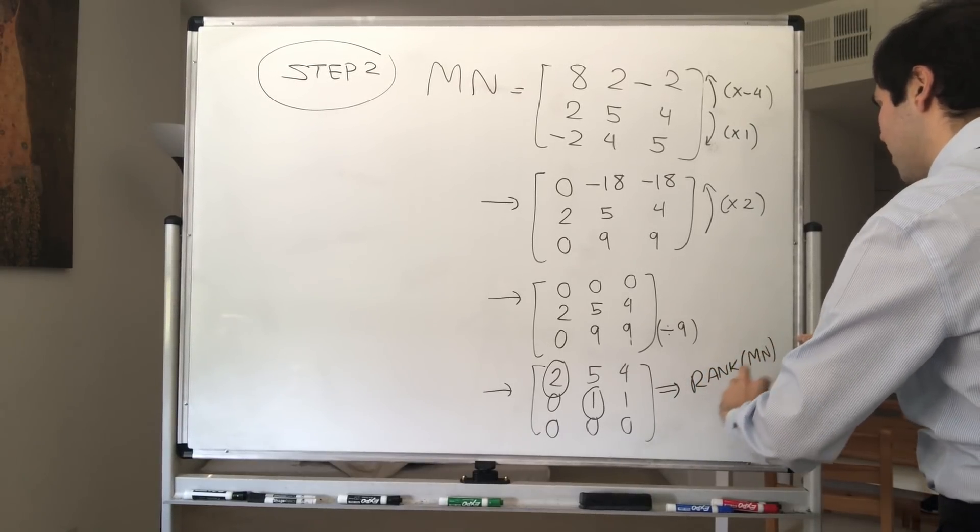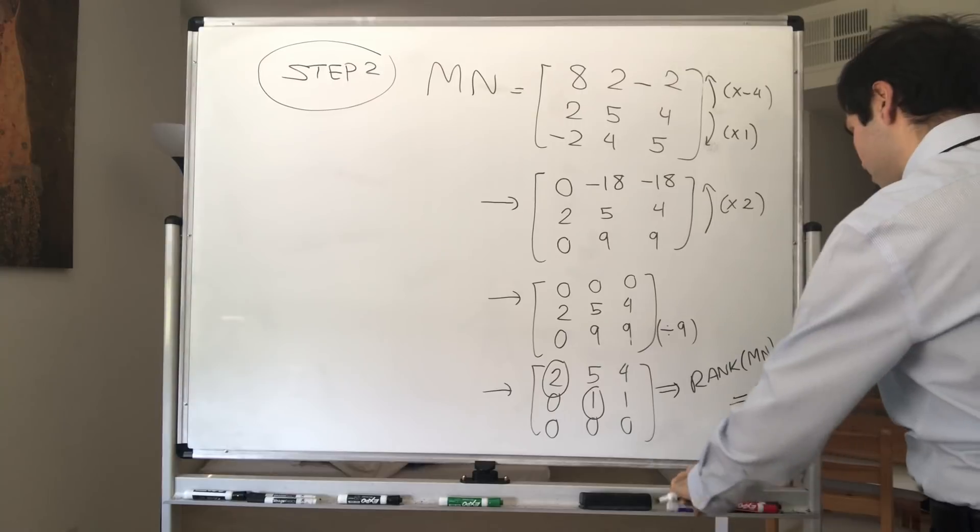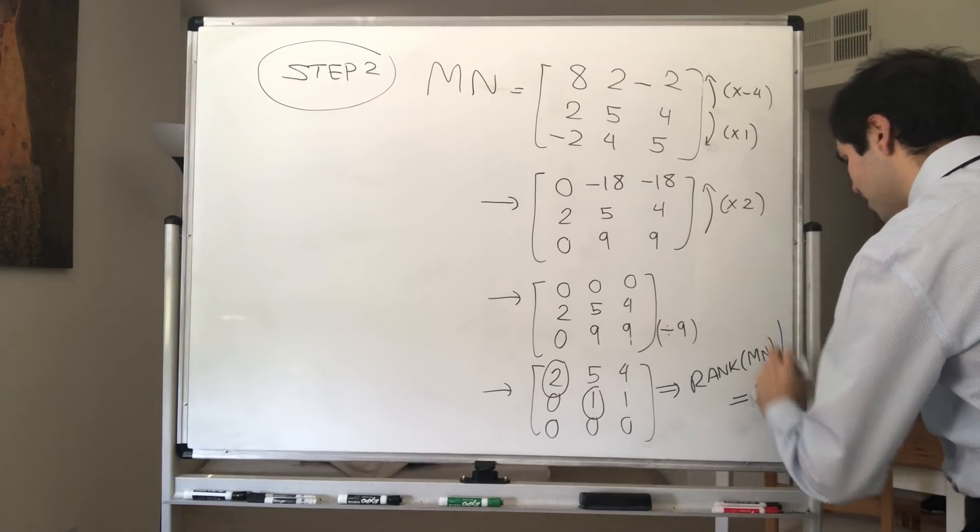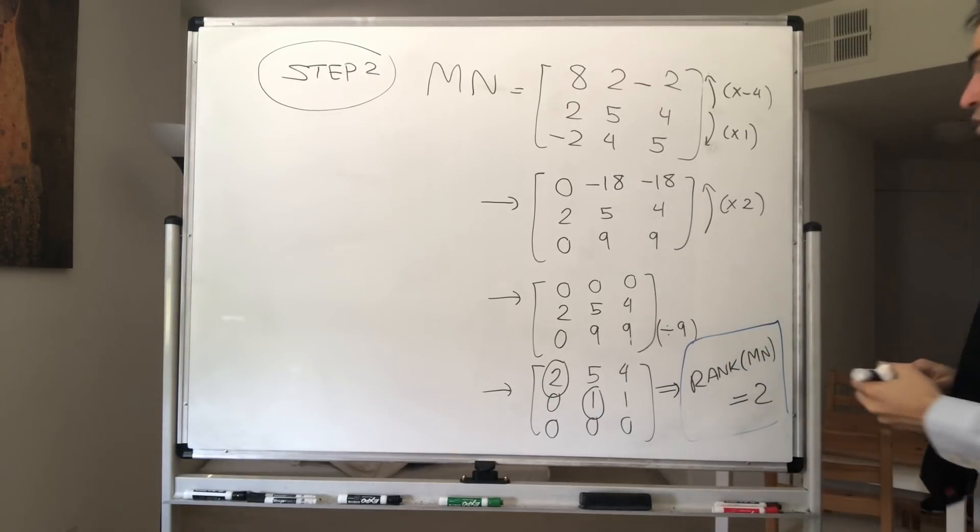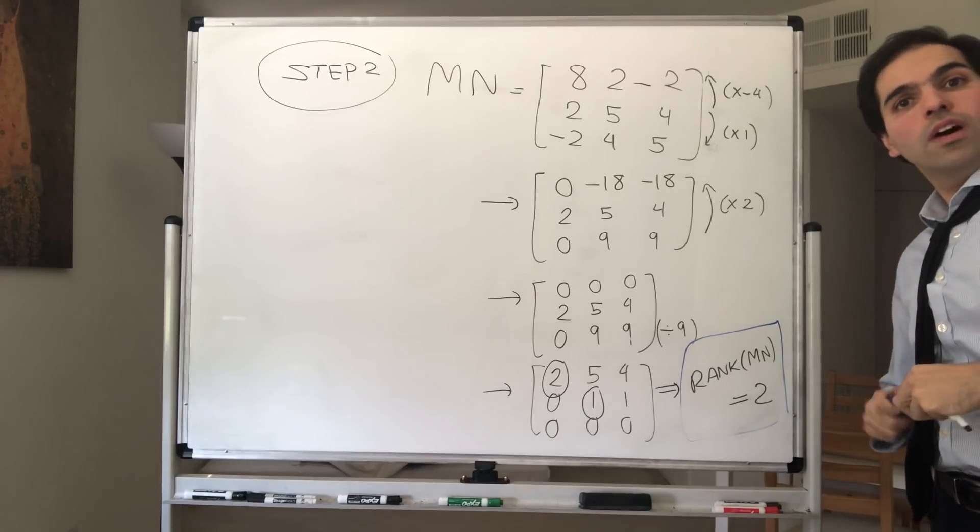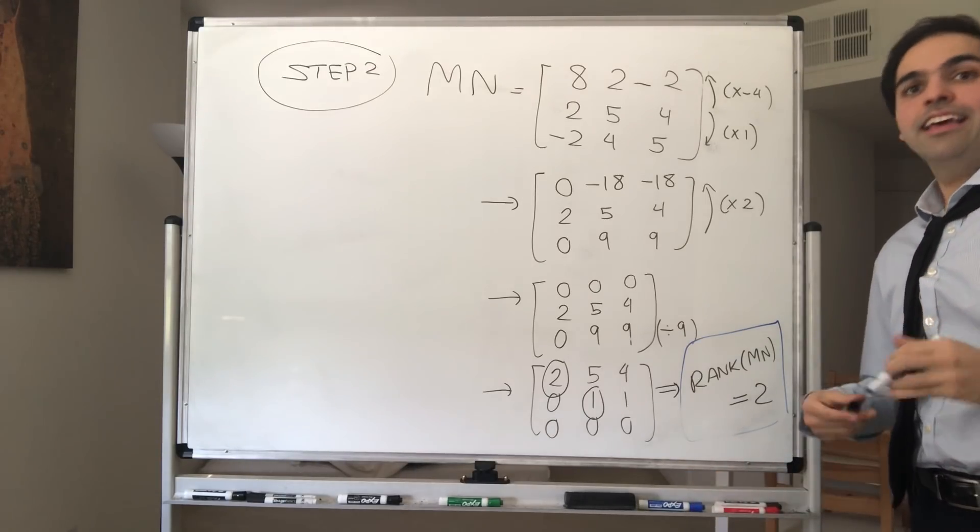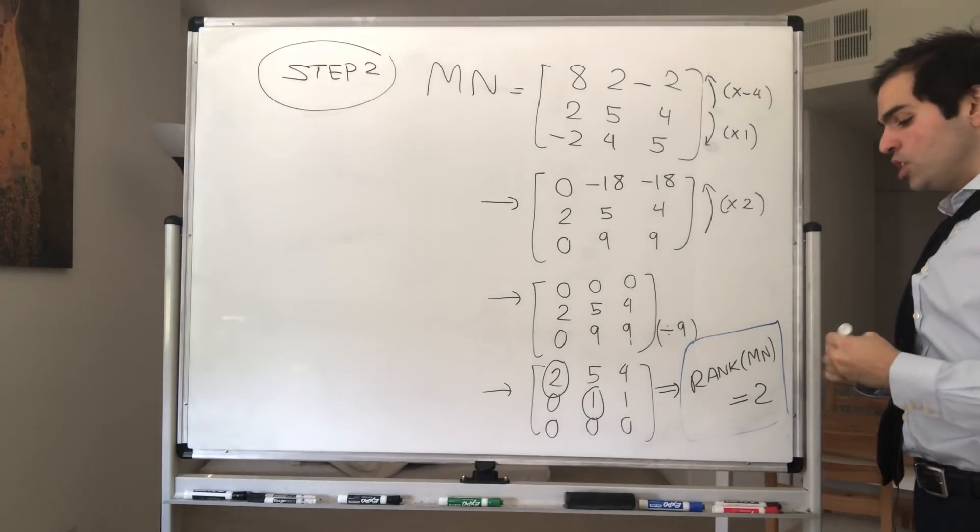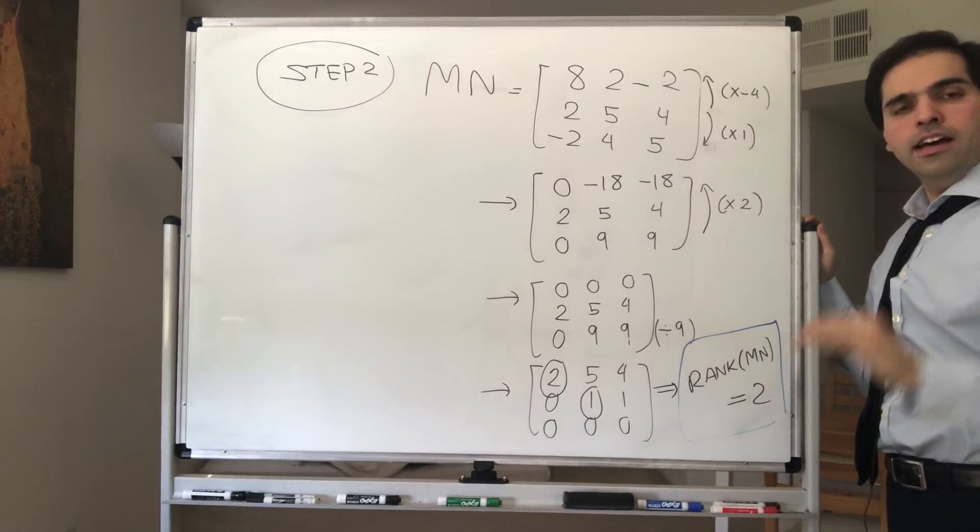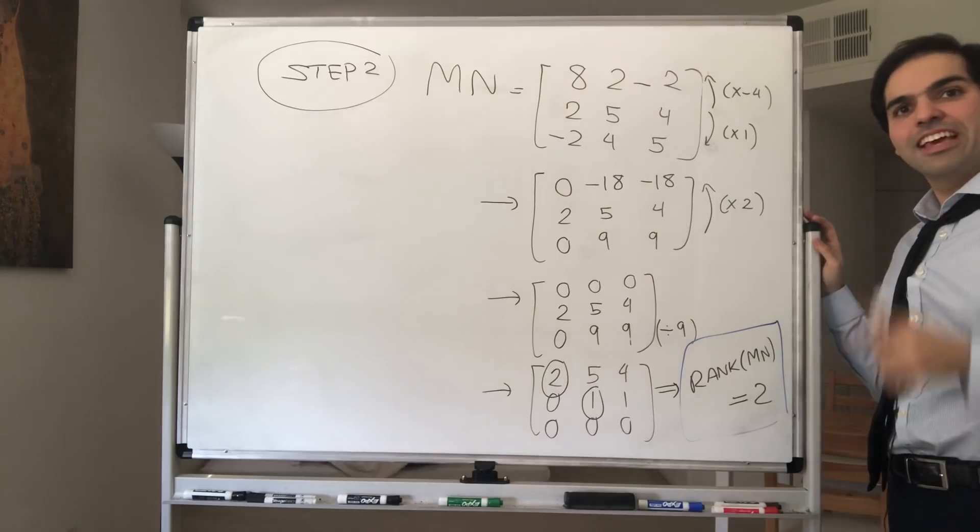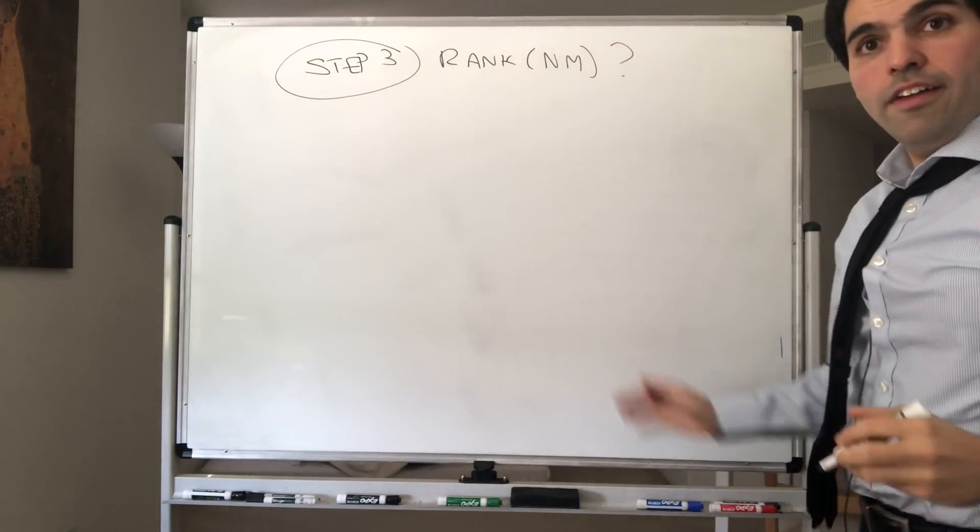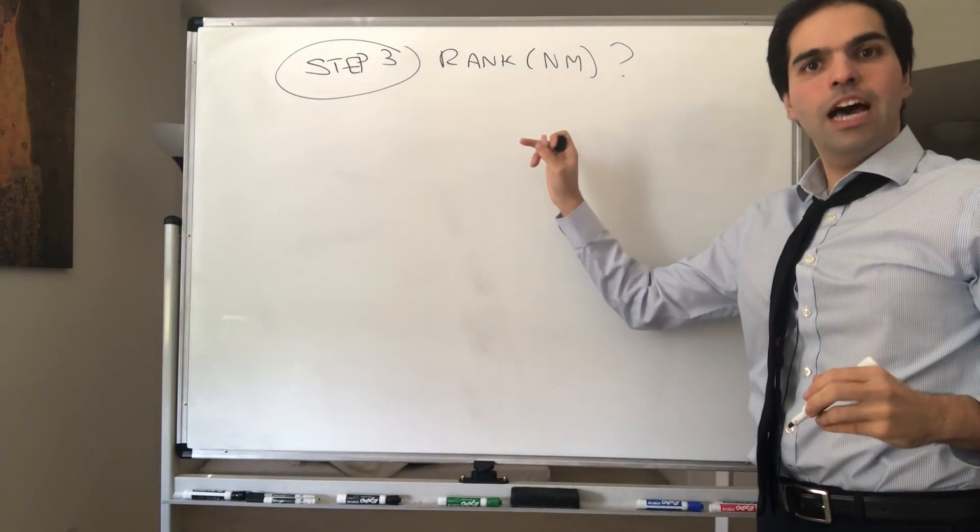So the rank of MN is 2. And then we'll need this, because remember, what is our goal? Our goal is to find NM, and we can actually use the rank of MN to find the rank of NM. Who would have thought? Alright, so now let's find the rank of NM.